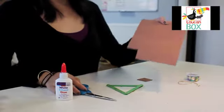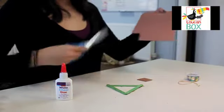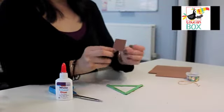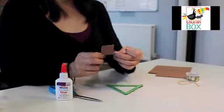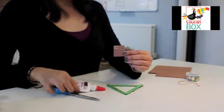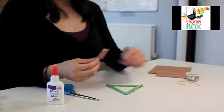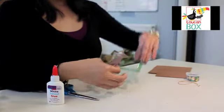Next you're going to take your brown foam sheet and cut out a trunk shape. Apply glue to one end of your foam cut out and stick it on the back of your ornament.